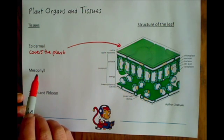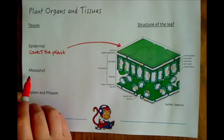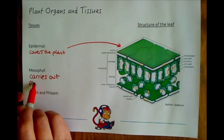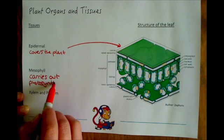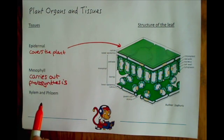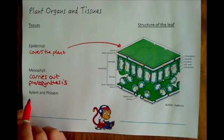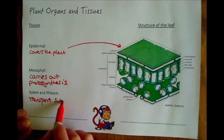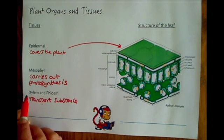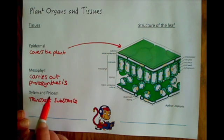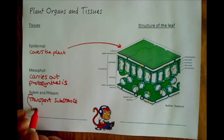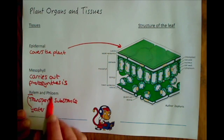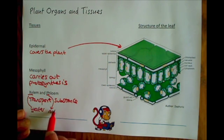The second tissue that you need to know about is the mesophyll, and this has a really important role — it carries out photosynthesis. Finally, the xylem and phloem transport substances around the plant: the xylem transports water and the phloem transports nutrients. We tend to remember that because the x and the w are far on in the alphabet, so xylem carries the water and the phloem carries the nutrients.